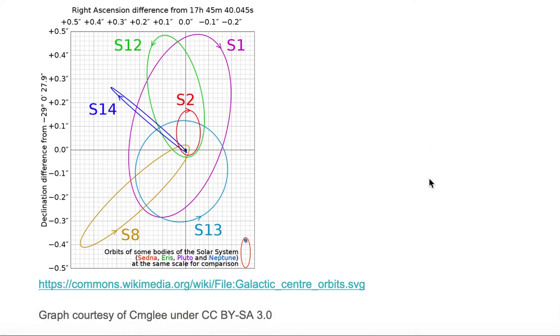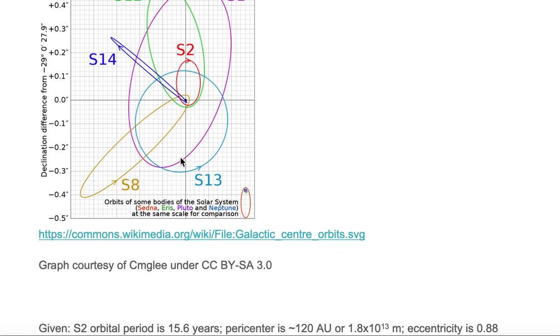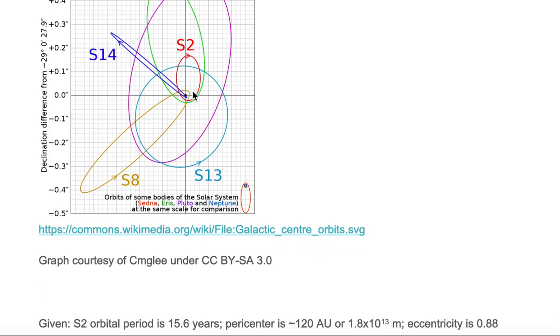Here we're looking at a graph that's centered on the center of our Milky Way galaxy, which is Sagittarius A star at zero zero in this graph coordinate system. We're looking at various objects making their elliptical or circular orbits around SgrA star. Specifically, we're going to be looking at the orbit of S2.